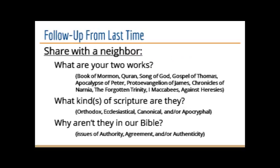To review a little bit, last time I gave everybody a handout to help them get some ideas down. We learned about the different categories of scripture and how to identify if something is canonical or not. I gave you a list of books including the Book of Mormon, the Quran, the Gospel of Thomas, and others listed on the screen — all books that are not in the Bible. Your task was to figure out what kinds of scripture they were and why they weren't in the Bible.